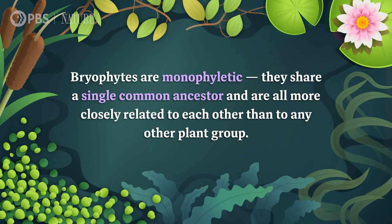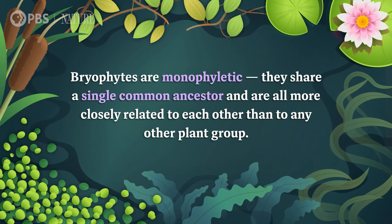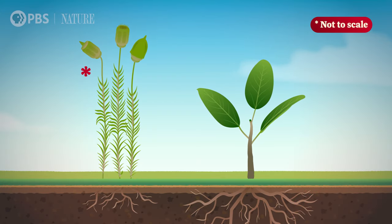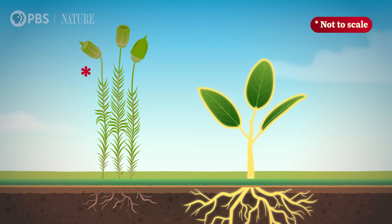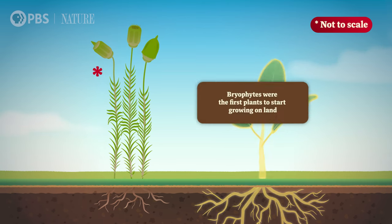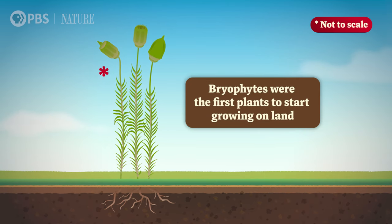So what are bryophytes? Most notably, they don't have the typical organs that most plants have today, like stems, leaves, and roots. And they don't contain vascular tissue — the water and transport system found in all other plants, which developed later with seedless vascular plants. Bryophytes were the first plants to start growing on land instead of in water. Before that, there was pretty much no multicellular life on land at all. Animals all lived in water because that's where the food was.